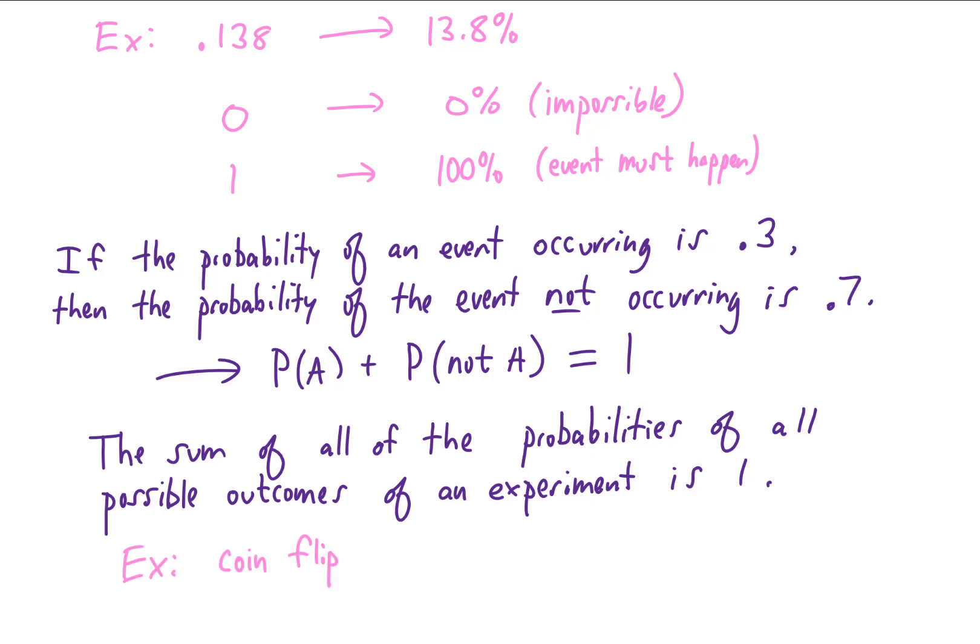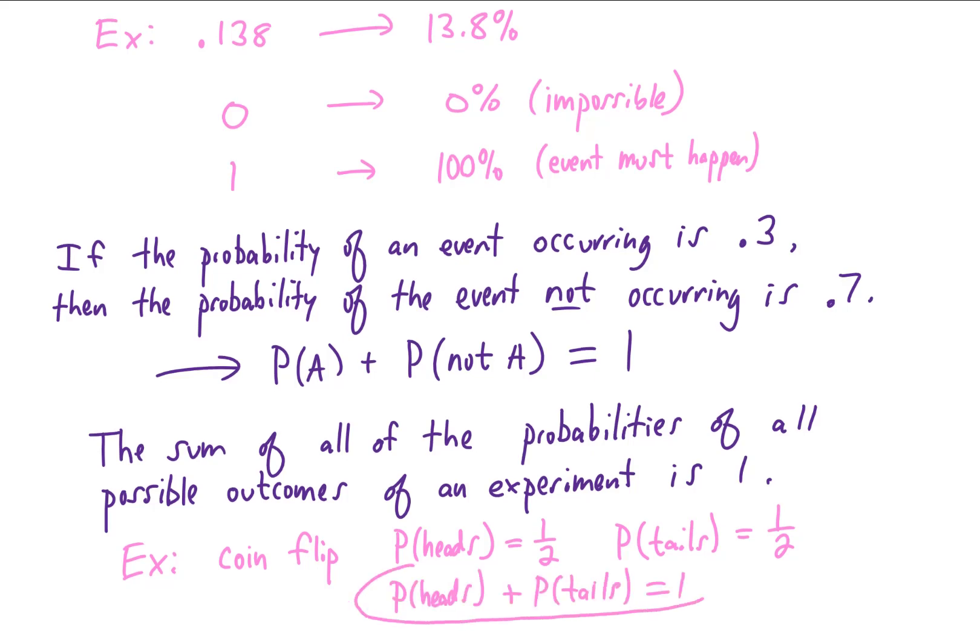Let's take the example of a coin flip. The two possible outcomes of a coin flip are heads and tails. The probability that you're going to flip heads is typically 1 half if it's a fair coin, and the probability that you're going to flip tails is also 1 half. Those are the only two possible outcomes of this experiment, which we're calling a coin flip, so the sum of those two outcomes must be 1. We would write that as the probability of getting heads plus the probability of getting tails equals 1.